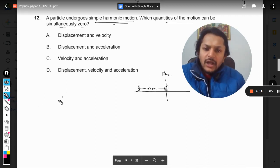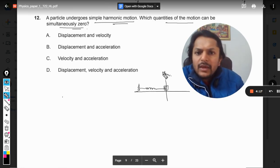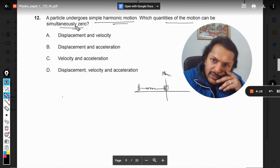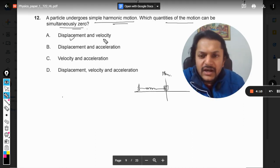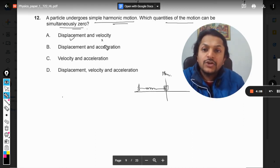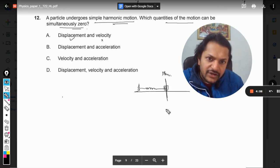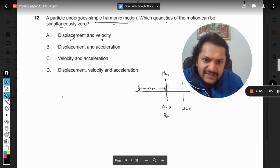So as we know, which quantities of the motion can be simultaneously zero? Displacement will be zero, but when displacement is zero, velocity is not zero. Here the displacement is zero and velocity is zero at the extreme positions, and acceleration is also zero at the mean position.